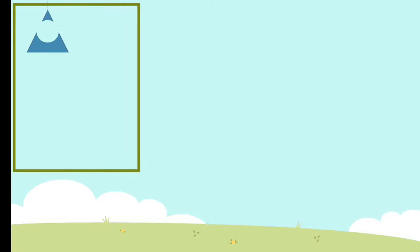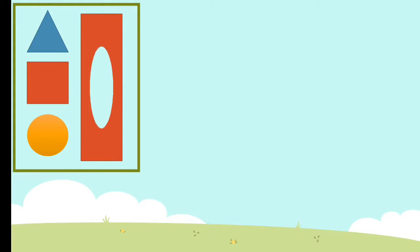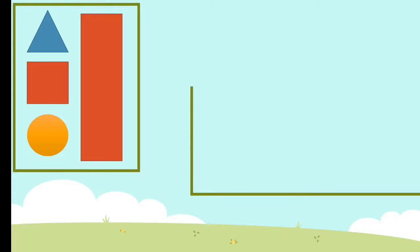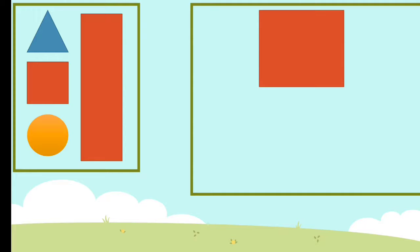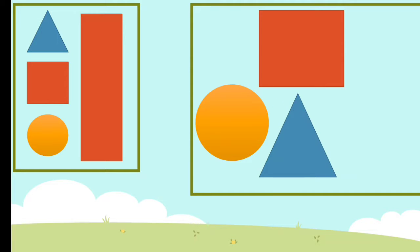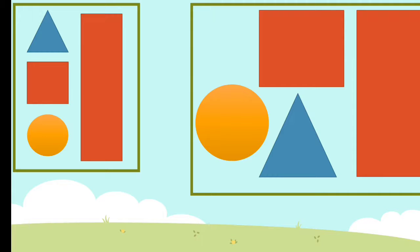Now I want you to look at the pictures of these shapes. In the first box I have a blue triangle, a red square, a yellow circle, and a red rectangle. And in the second box here I've got bigger shapes, which is a red square, yellow circle again, blue triangle, and red rectangle.